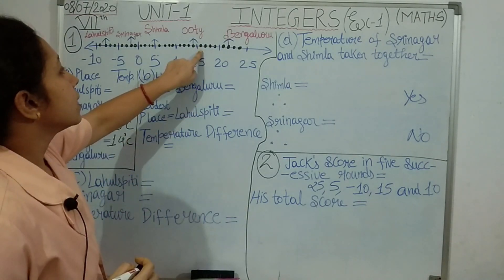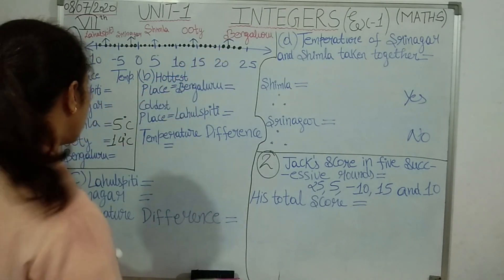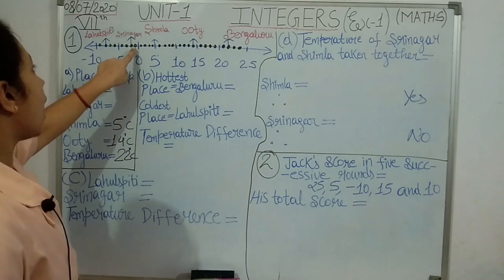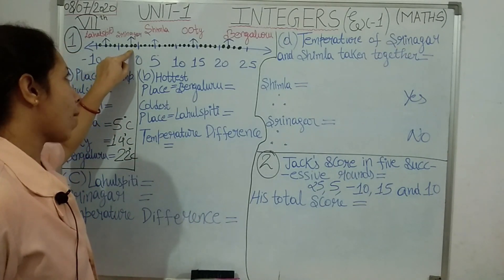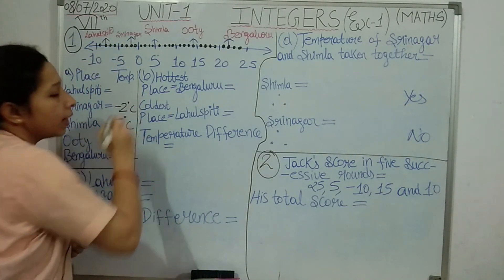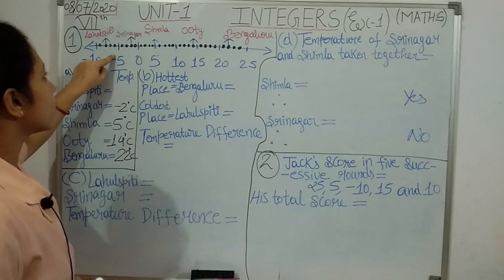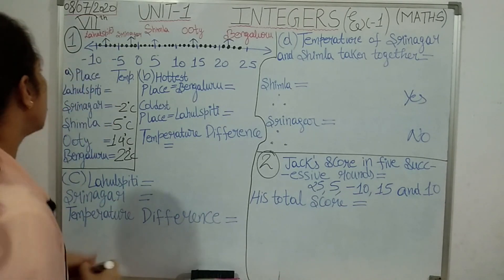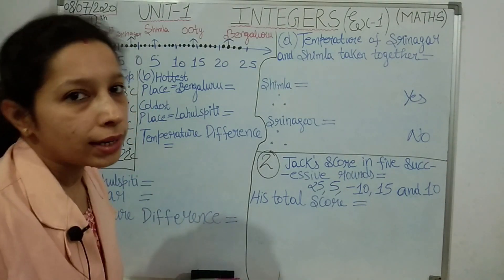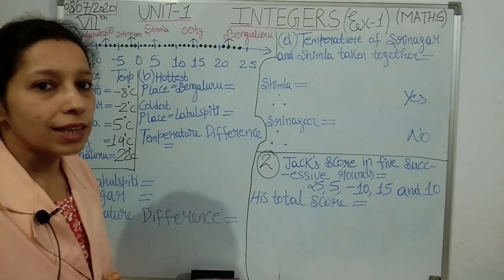Then after 0 on the negative side, here it is minus 1, then minus 2, and at minus 2 Srinagar is written. So the temperature of Srinagar is minus 2 degree Celsius. Then after minus 2: minus 3, minus 4, minus 5, minus 6, minus 7, minus 8. So Lahul Spiti is showing minus 8 degree Celsius. So point A is clear — you are asked to observe the number line and write the temperature near the places.